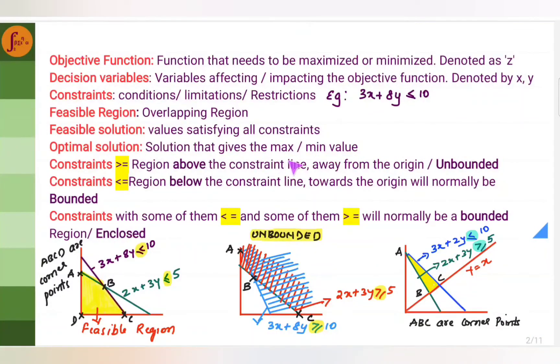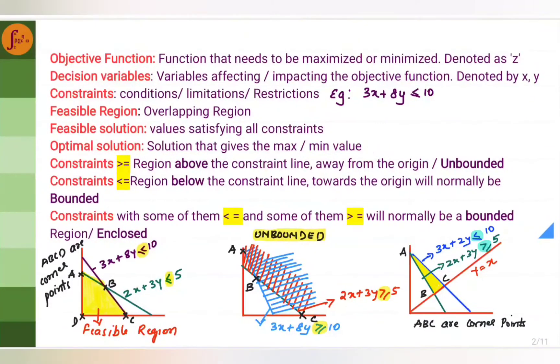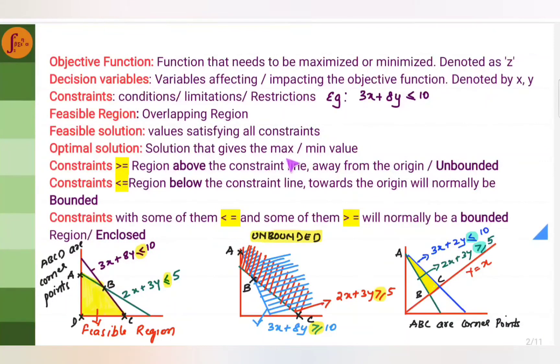The optimal solution is a solution that gives the maximum or minimum value — for example, the solution that gives the maximum profit or minimum cost becomes the optimal solution.